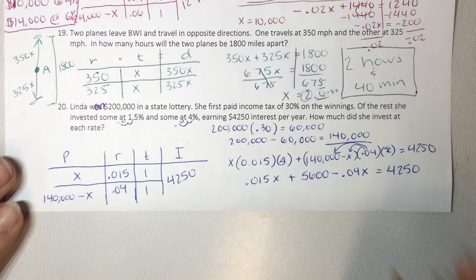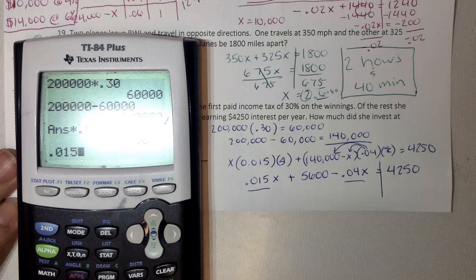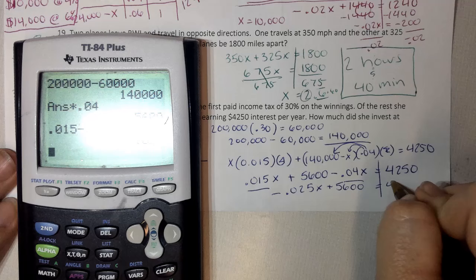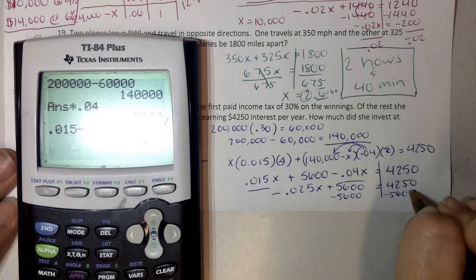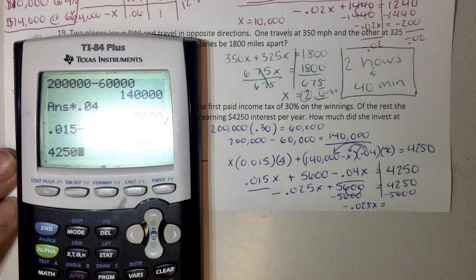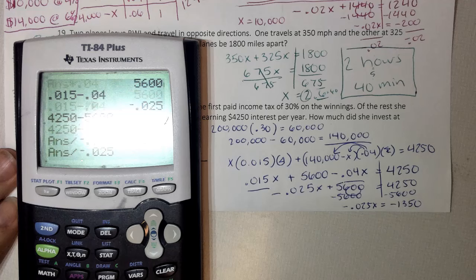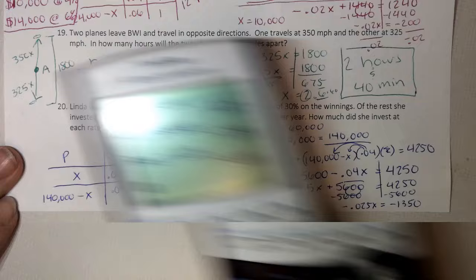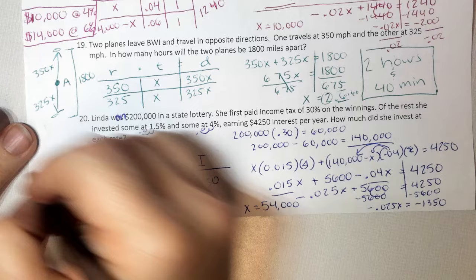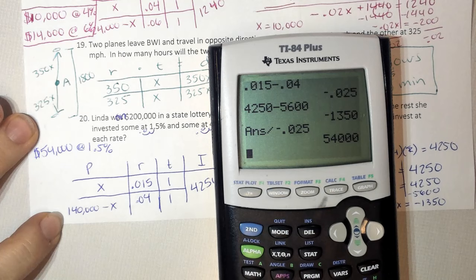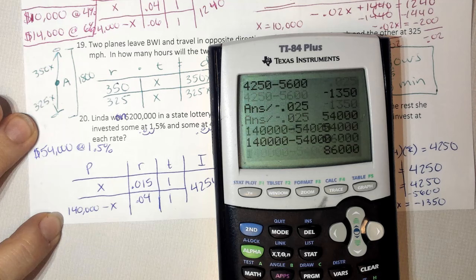Combine my like terms. And I get negative 0.025x plus 5,600 equals 4,250. Minus 5,600, minus 5,600. So I'm going to divide both sides by negative 0.025, and I get x equals 54,000. Now I have to go back and read my question. How much did she invest at each rate? So my 1.5%, she invested 54,000. And then 140,000 minus 54,000, so 86,000 at 4%.